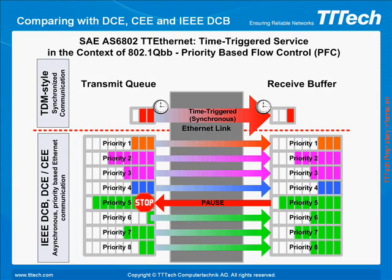For example, this could extend the applicability of iSCSI or Fibre Channel over Ethernet to large networks hosting different applications.